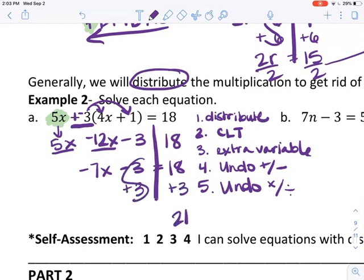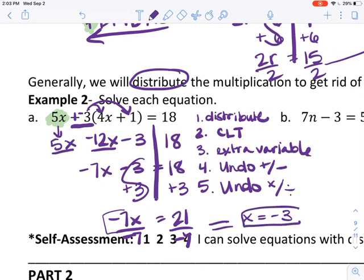Now divide by negative 7 - make sure you divide by the negative number, the whole thing - and we get x equals negative 3. Remember how you check your answer: plug in negative 3 everywhere there is an x and see if it equals 18. If it does, we did it right.